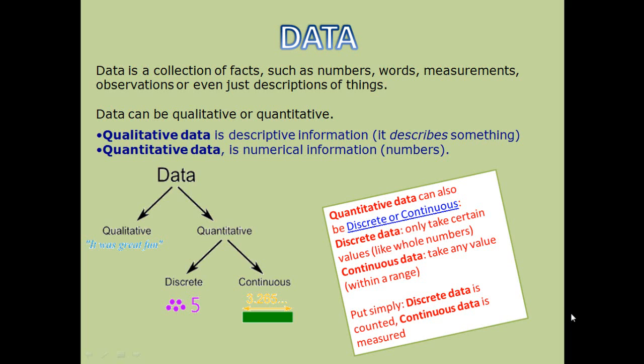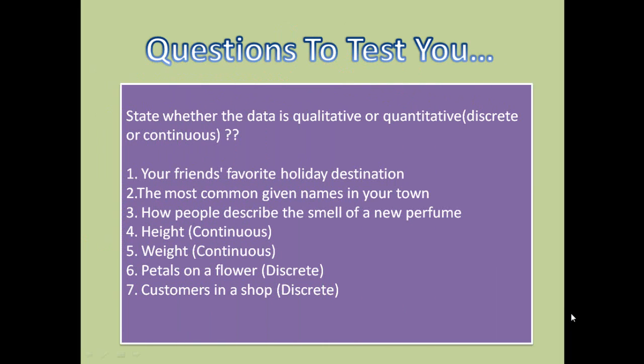When you talk about the number on a dice, which can be 1, 2, 3, 4, 5, and 6 — these are presented in the form of whole numbers. Therefore, it is discrete data.